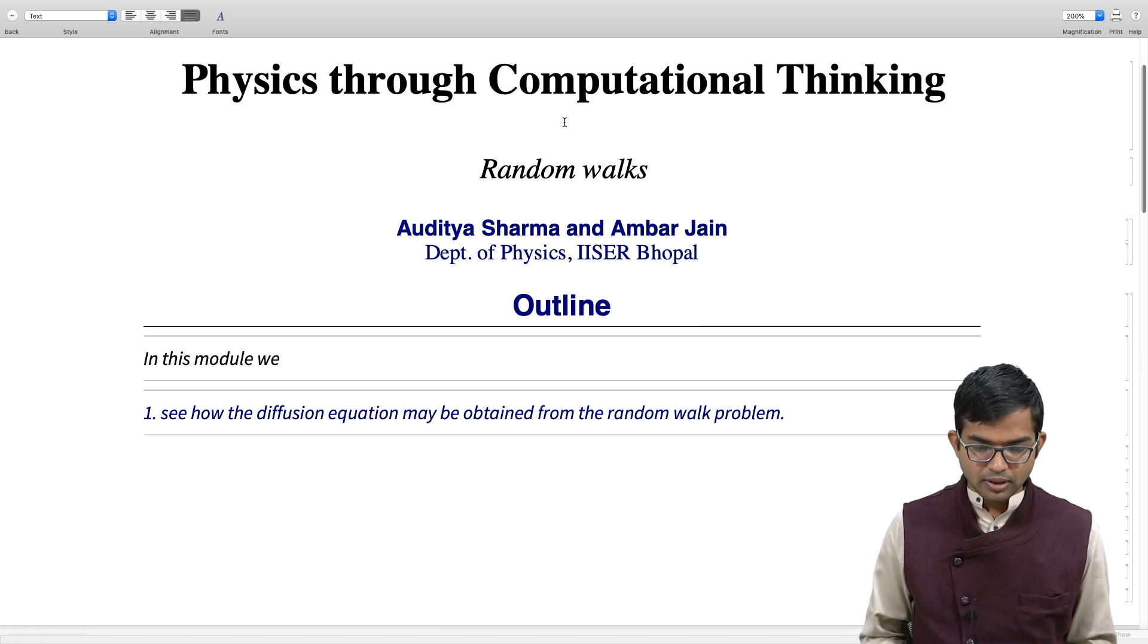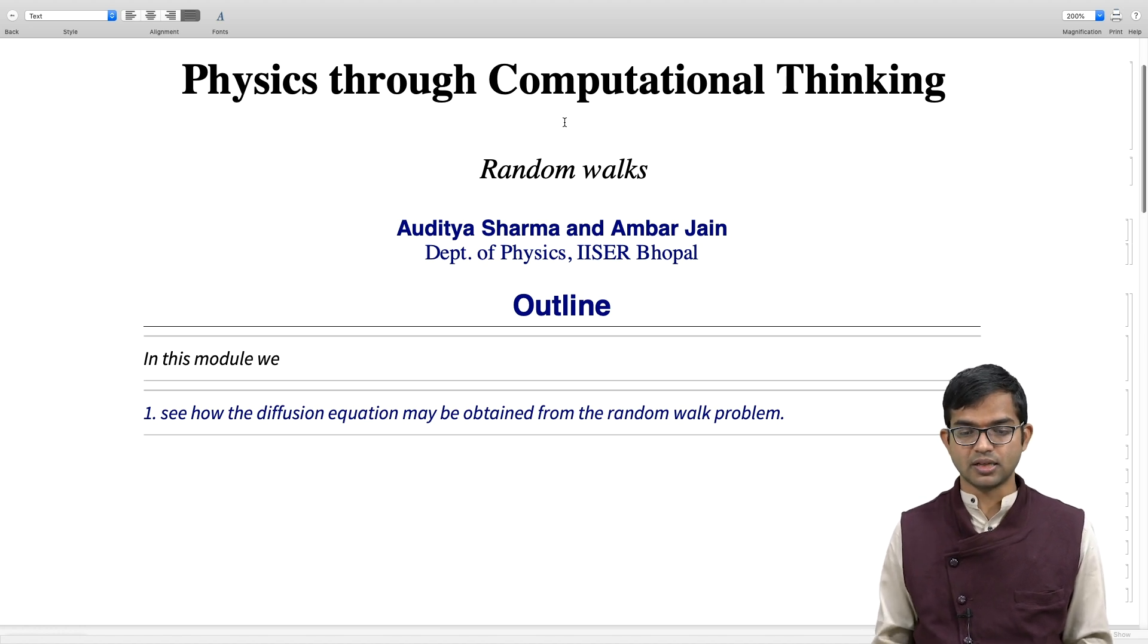And so in this module, we are going to see how this connection between random walks, which I described last time, this discrete random walk, and how one can make contact to a partial differential equation, which is actually that of diffusive motion. That is the agenda for this module.